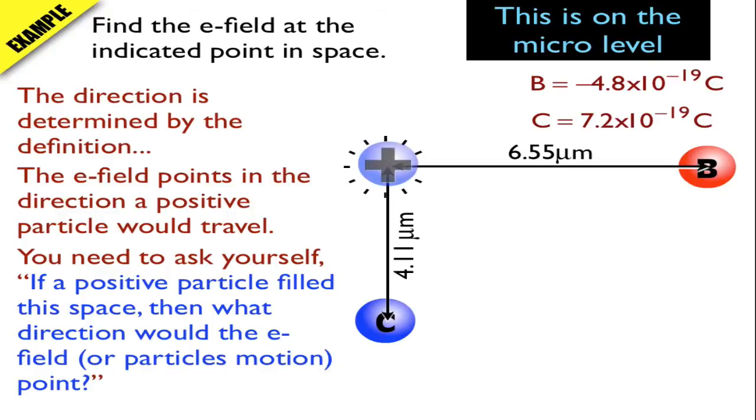So if I put a particle here, I know that C is going to repel it because C is also positive. So that charged particle is going to move up. So that's going to be the direction of the E field due to point C, or particle C.